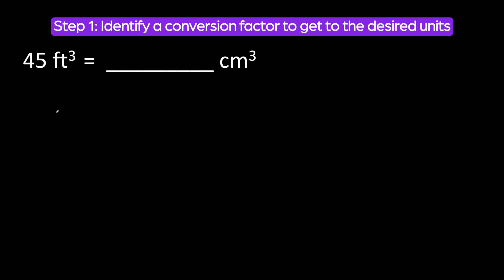First, we need to identify a conversion factor that will help us to change cubic feet to cubic centimeters. We can use this one: 1 cubic foot is equal to 28,316.8 cubic centimeters.